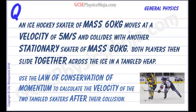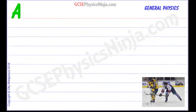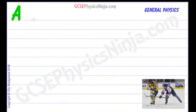In this flashcard question we're going to use the law of conservation of momentum to calculate the velocity of two ice hockey players when they've collided together. One of the ice hockey players hits into a stationary other ice hockey player and then they both slide across the ice. Let's start this calculation by doing a before and after diagram.